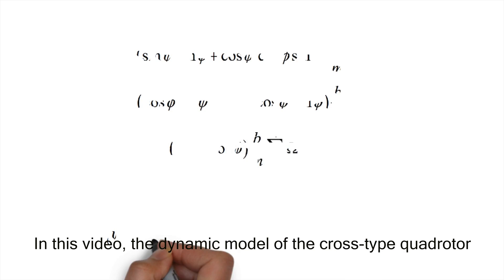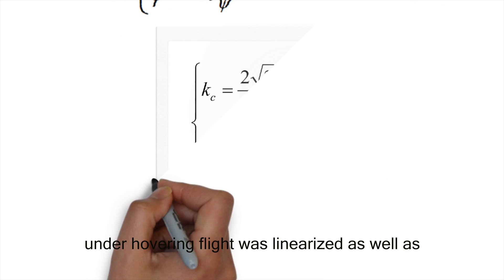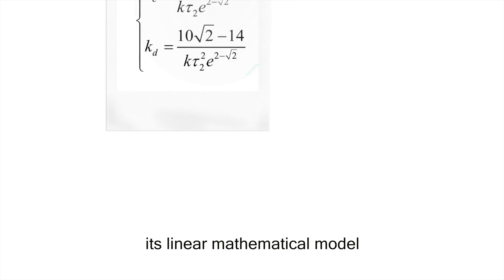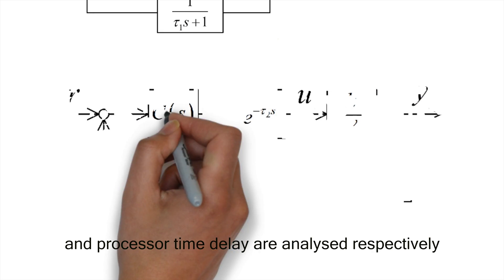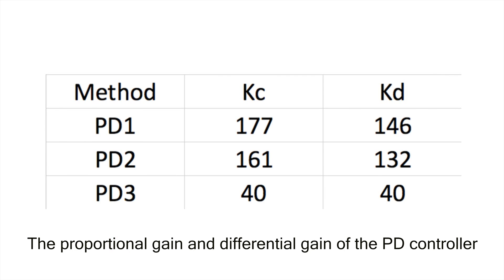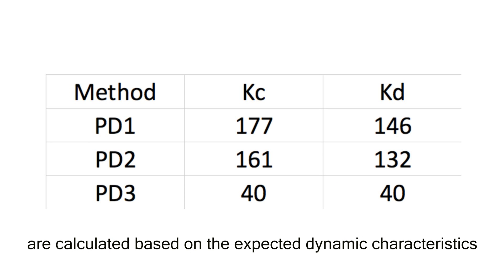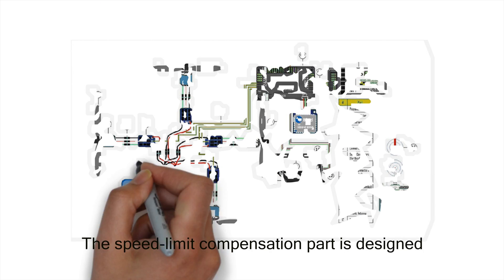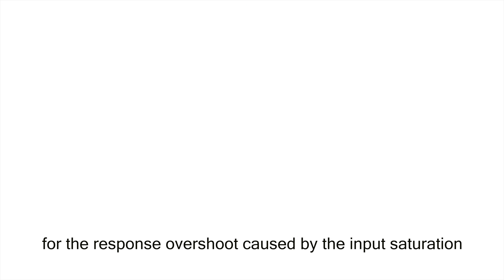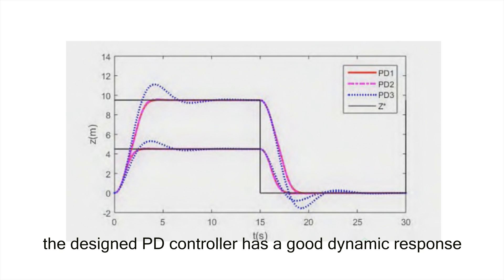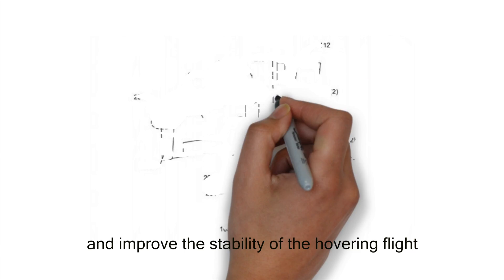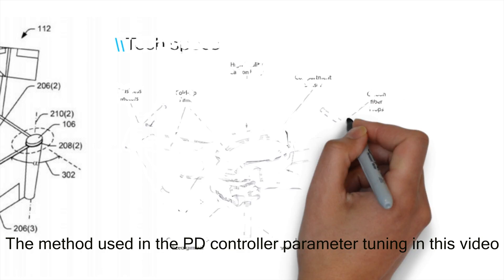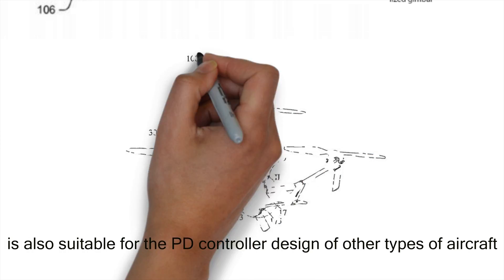In this video, the dynamic model of the cross-type quadrotor under hovering flight was linearized as well as its linear mathematical model. The dynamic characteristics of the system with sensor time delay and processor time delay are analyzed respectively. The proportional gain and differential gain of the PD controller are calculated based on the expected dynamic characteristics. The speed limit compensation part is designed for the response overshoot caused by the input saturation. The simulation results show that the designed PD controller has good dynamic response and the introduced speed limit compensation can effectively restrain overshooting and improve the stability of the hovering flight. The method used in the video for controller parameter tuning is also suitable for the PD control design of other types of aircraft.